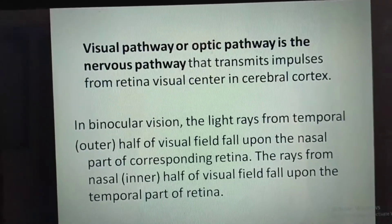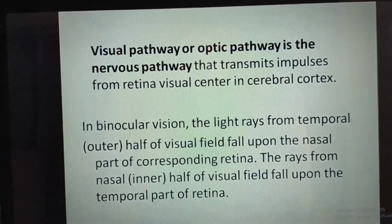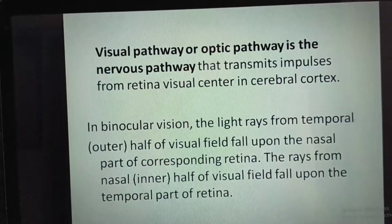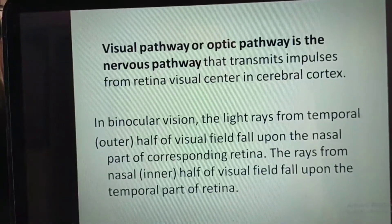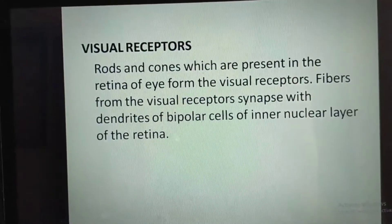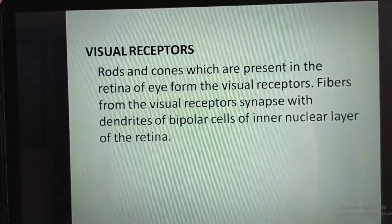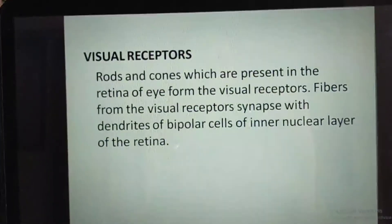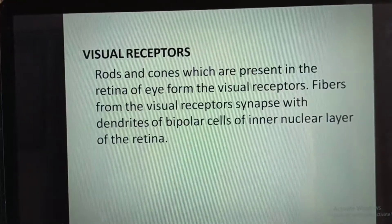In binocular vision, the light rays from the temporal half of the visual field fall upon the nasal part of the corresponding retina. The rays from the nasal half of the visual field fall upon the temporal part of the retina. Visual receptors, rods and cones, which are present in the retina, synapse with dendrites of bipolar cells of the inner nuclear layer of the retina.